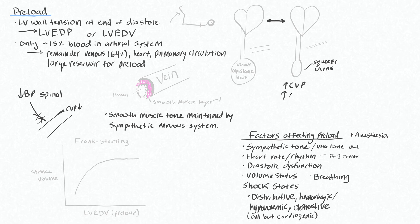We need to increase right heart filling and increase our left ventricular preload. You can achieve this by giving an alpha-1 agonist, which causes contraction of these smooth muscles — there are alpha-1 receptors on these veins. Anytime we talk about preload it's worth mentioning the Frank-Starling curve.